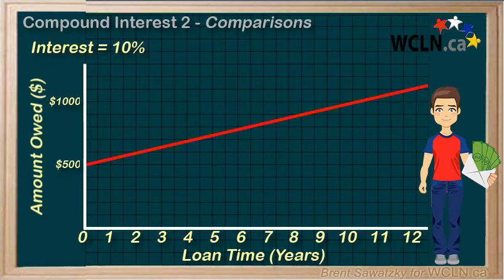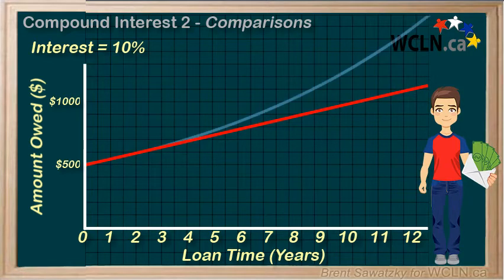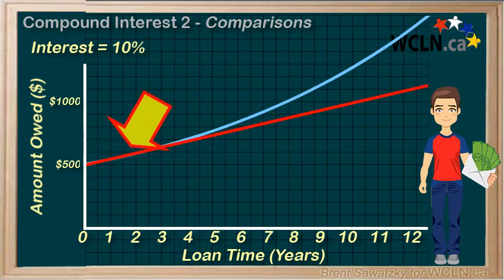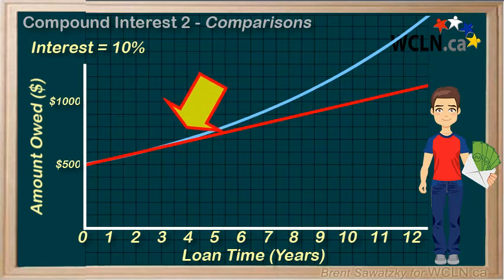Now let's look at compound interest. If compounded yearly — that is, the amount that Jerry is paying interest on is updated each year — then it looks like this. In the first year, Jerry pays interest on $500. In the second year, he pays interest on $500 plus $50, or $550. And it grows from there.